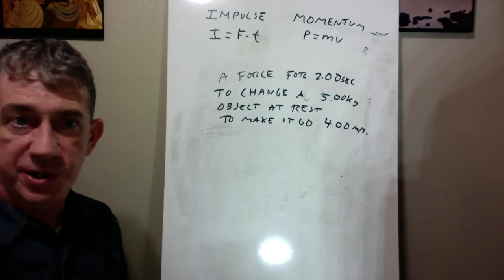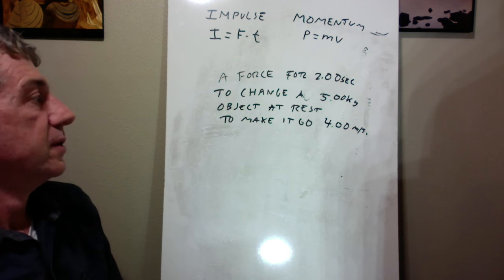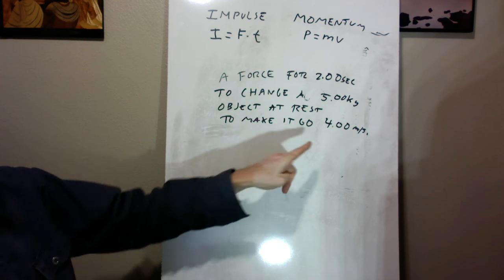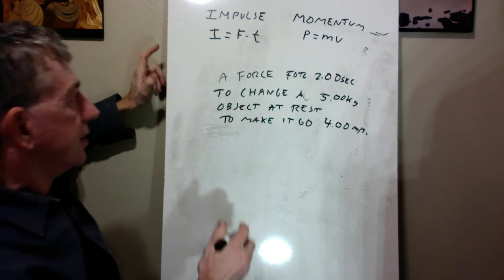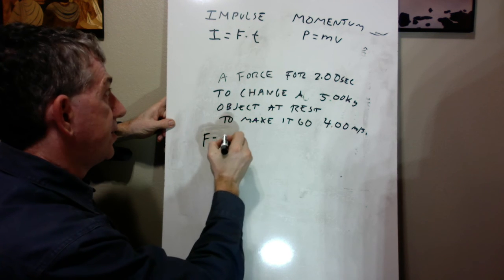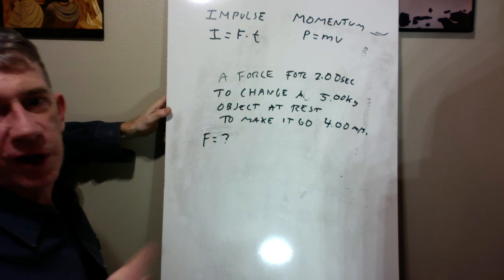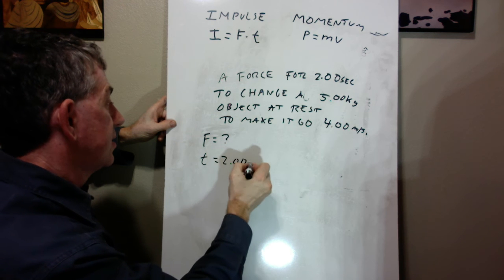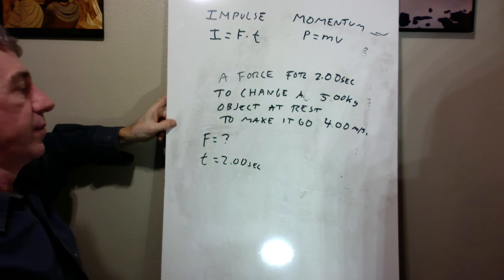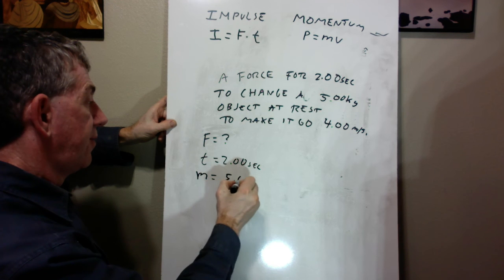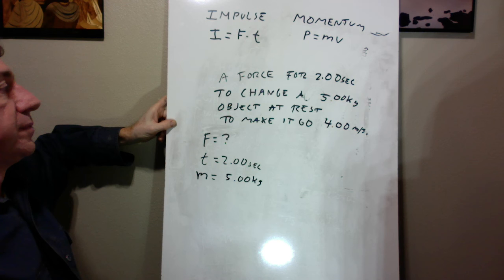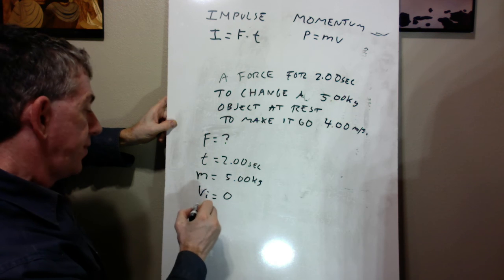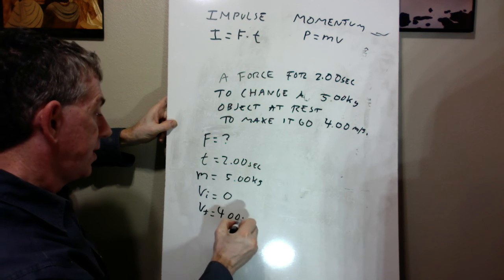So maybe copy that down in your notes, since I have a different version of it. We're going to apply this force for a period of time. It's an impulse. And we're going to change the momentum. We're going to make it go from rest to four meters per second. So the force is unknown. That's what I want us to find. I want us to find the force required to do that. The time is two seconds. The mass is five kilograms. When it's at rest, that's the initial velocity. The final velocity is four meters per second.